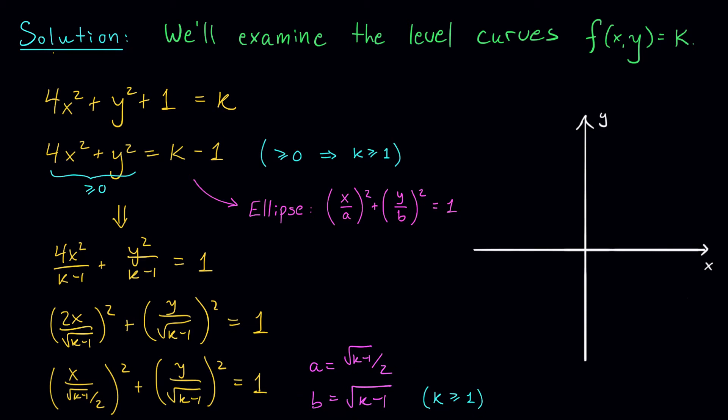In the case when k is as small as possible, when k = 1, this equation is going to become 4x² + y² = 0. Well, how can you add two squared terms and get 0?